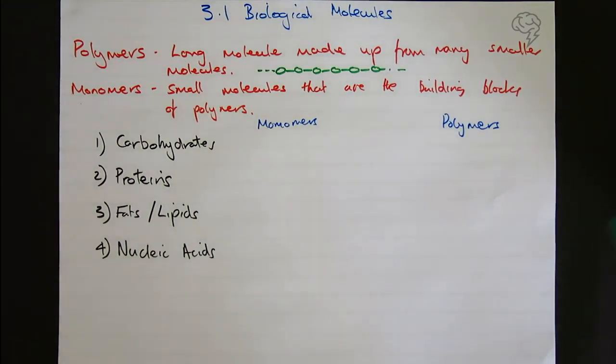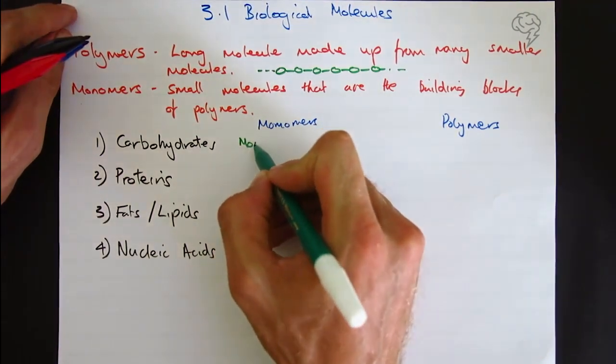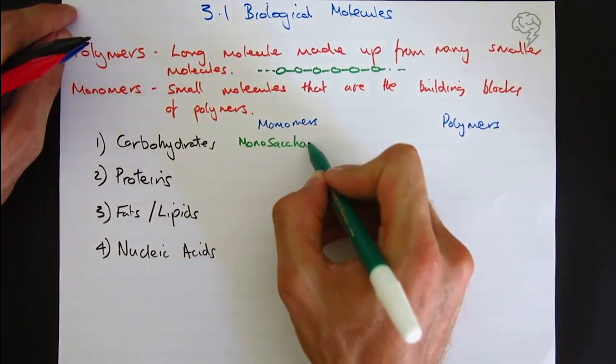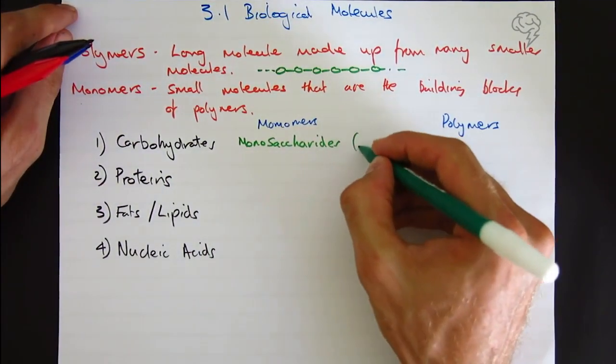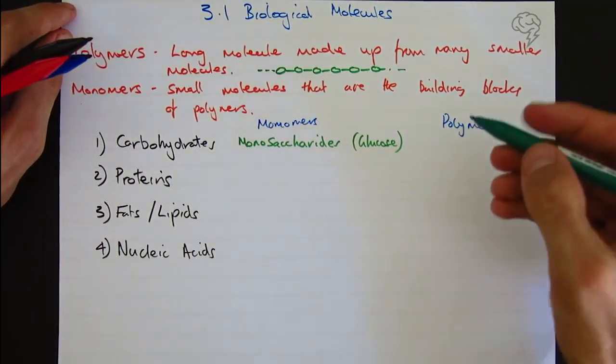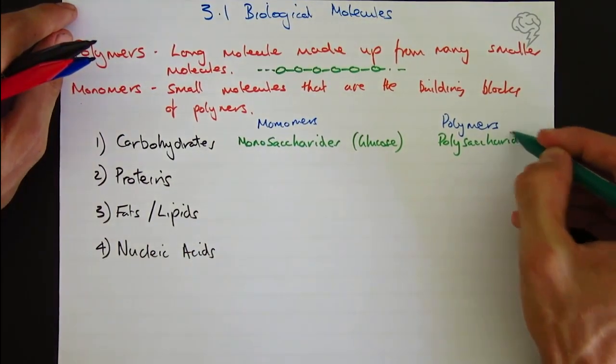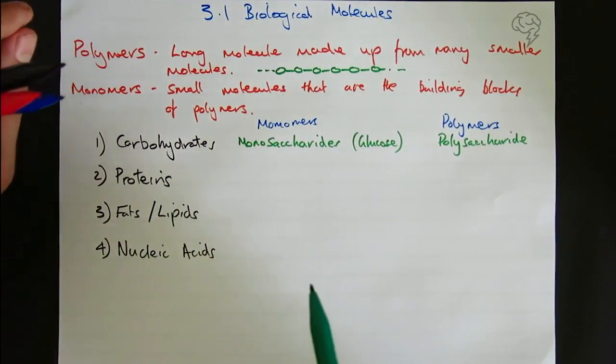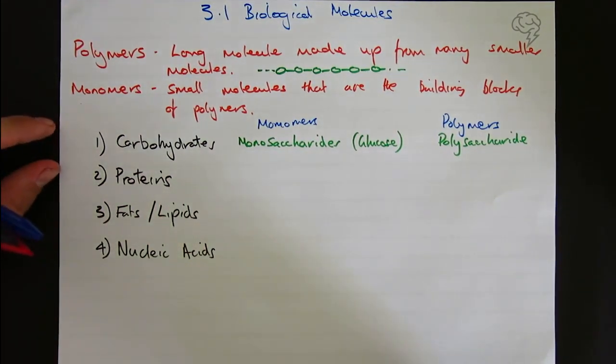Carbohydrates have monomers called monosaccharides. An example would be glucose, the most common. For the polymer we call it a polysaccharide. If you see saccharide anywhere you know it's a sugar or carbohydrate. All sugars are also carbohydrates. As long as you can recognize them you know how to answer the questions.